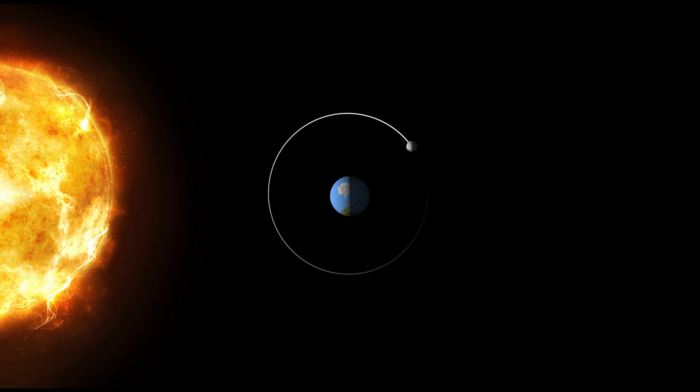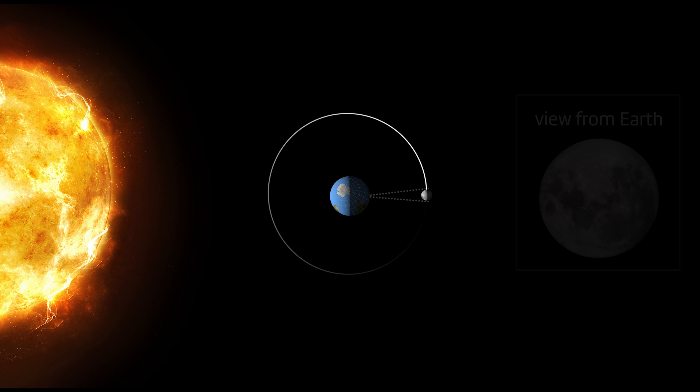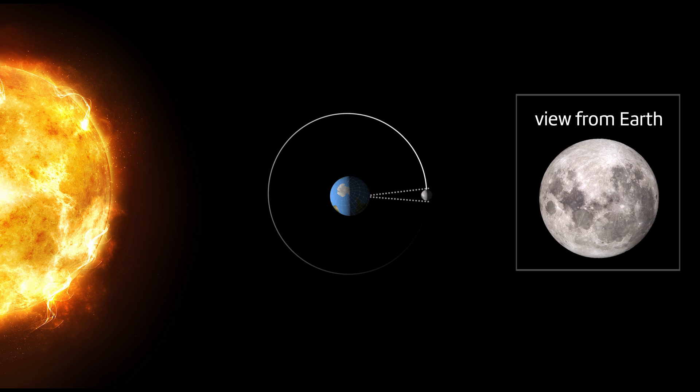When the Moon reaches the halfway point on its orbit around the Earth, we can see the whole lit up side. This is a full Moon.